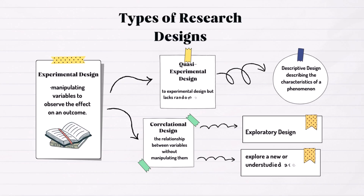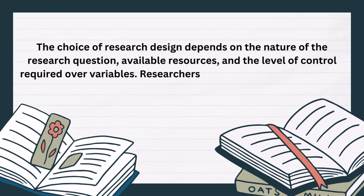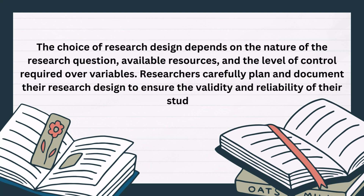Here are different types of research designs: Experimental design involves manipulating variables to observe the effect on an outcome. Quasi-experimental design is similar to experimental design but lacks random assignment. Correlational design examines the relationship between variables without manipulating them. Descriptive design focuses on describing the characteristics of a phenomenon. Exploratory design is used to explore a new or understudied area. The choice of research design depends on the nature of the research question, available resources, and the level of control required over variables.